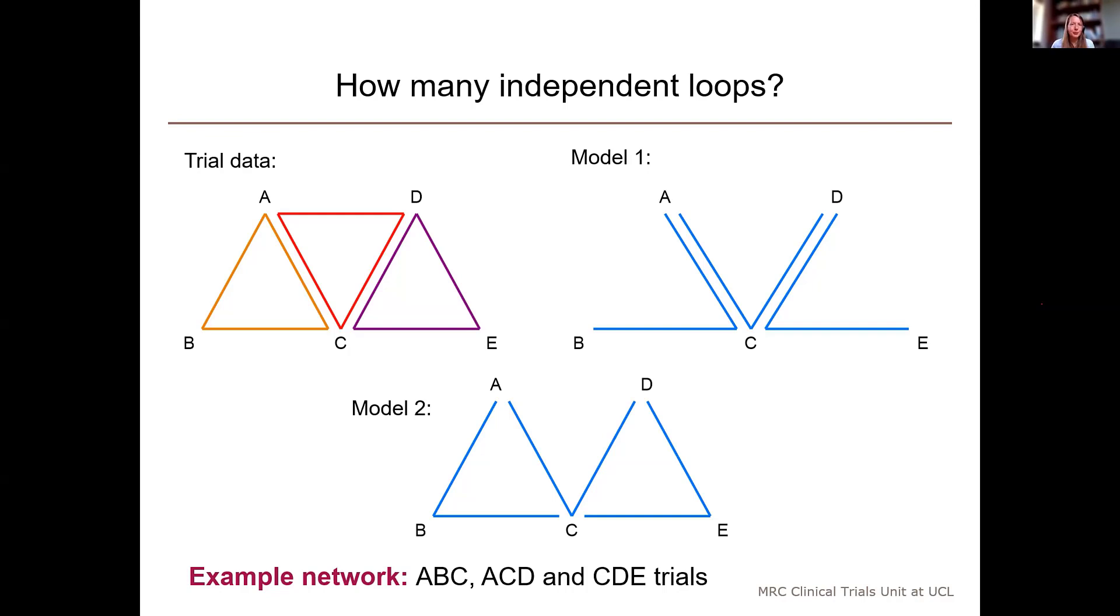As in the previous example, we're choosing which two contrasts are fitted to the trial data for each of the three-arm trials. And the choices we make will produce different numbers of loops. In model one, we are parameterizing the trial so that we maximize the overlap between the parameters fitted in each trial design. And this parameterization creates no loops in the model. On the other hand, in model two, we have minimal overlap of parameters between trial designs, and this produces two loops in the model.